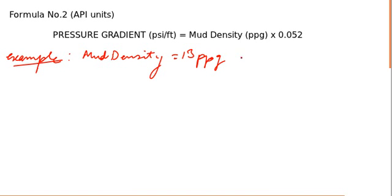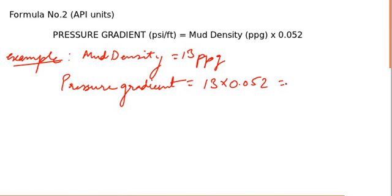Pressure gradient from the formula is mud density multiplied by the constant factor 0.052. This gives you 13 times 0.052.